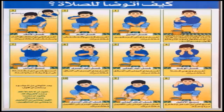إذن نعيد معا مراحل الوضوء: أولا أنوي الوضوء وأقول بسم الله. بعدها غسل اليدين ثلاث مرات. بعدها المضمضة. المرحلة التي تأتي بعدها الاستنشاق والاستنثار. غسل الوجه. غسل اليد اليمنى ثم غسل اليد اليسرى. مسح الرأس. مسح الأذنين.